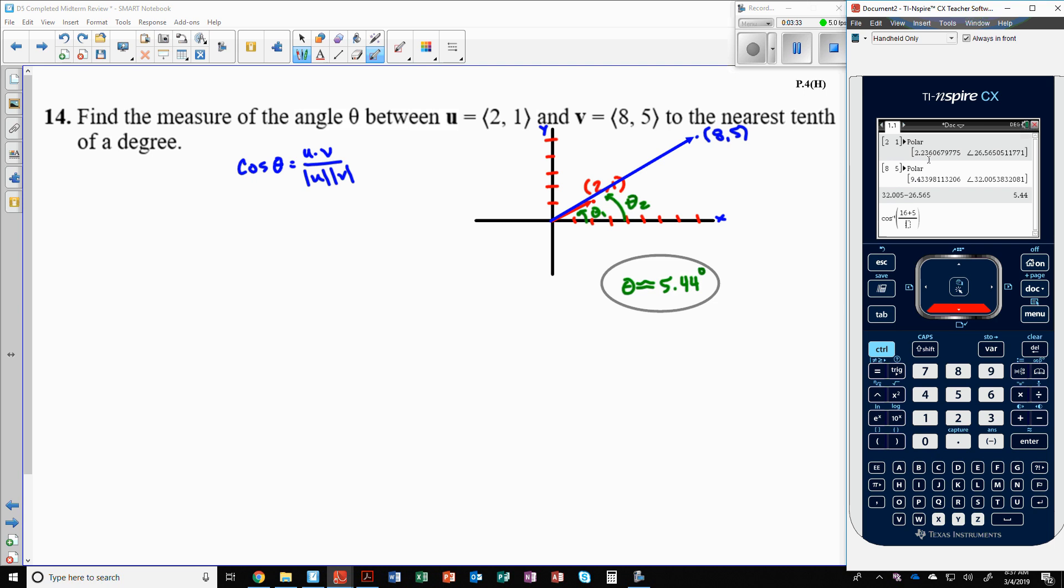And you'd put that over the magnitude of the first, which is 2.236 times the magnitude of the second, 9.433. I'm going to round it to 434. Press Enter. And you see, you get the same answer. It's just, the only difference is the rounding differences there. So we have done it correctly.